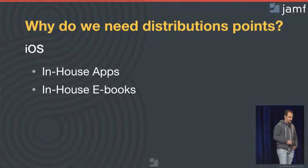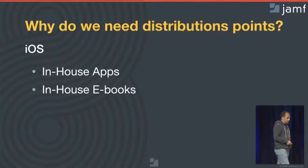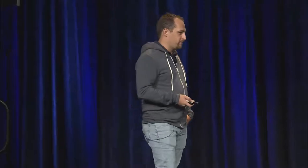Applications from the App Store or VPP store, iBooks from the eBook store, and all the software updates all come directly from one or another Apple server. But for those who are deploying in-house content, such as applications and eBooks, you might want to have some location to actually store those and push those out to your devices. Which means that for those only managing iOS devices and not planning to deploy any in-house content, you might not need a distribution point at all.